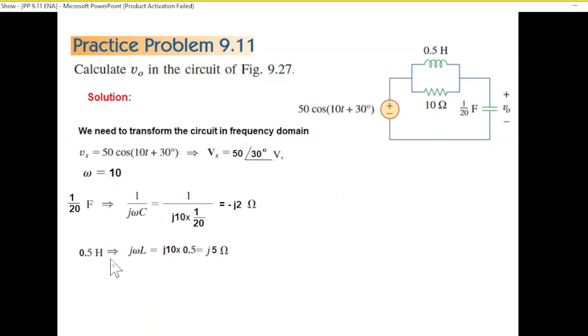Next is the inductor: jωL equals j10 × 0.5, so it's j5. The equivalent circuit now has the voltage source replaced by phasor 50∠30°, the inductor replaced by j5, and the capacitor replaced by -j2.